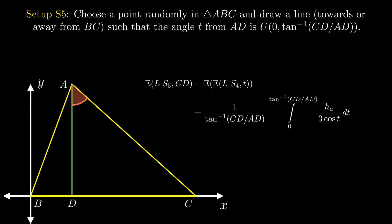Knowing that the integral of secant T is inverse hyperbolic sine of tan T, the expected value of our fifth setup with segment CD simplifies to Hₐ by 3 times the inverse hyperbolic sine of CD by AD divided by tan inverse of CD by AD.